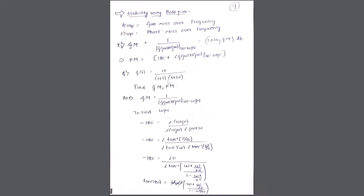Let us deal with the first question. G(s) = 10 / ((1+s)(s+20)), and you can assume H(s) = 1, so G(s)·H(s) = 10 / ((1+s)(s+20)). Find the gain margin and phase margin. The gain margin is 1 upon |G(jω)·H(jω)| at ω = ω_pc, so we first need to find ω_pc, then substitute into the magnitude expression.